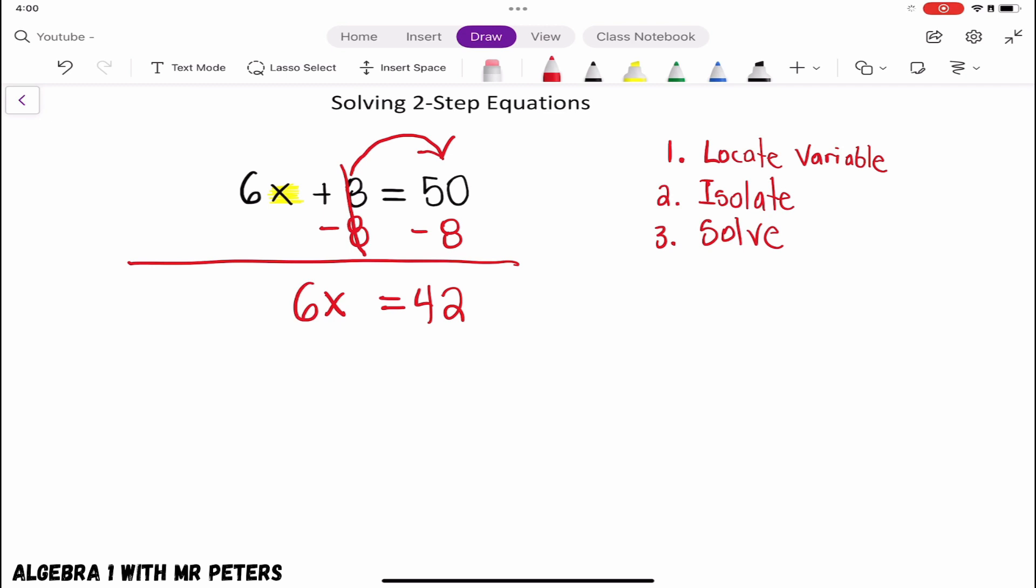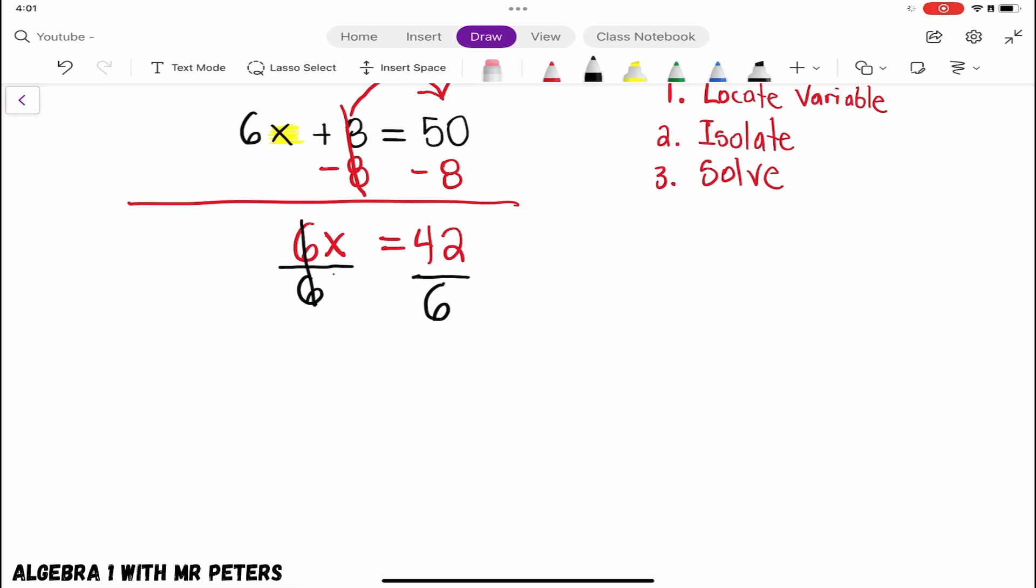So for us to get x absolutely by itself, we're now going to have to divide by 6. It's the opposite of multiplication, division. And then we'll go on the opposite side of the equal sign and we're going to do the same thing. And what I notice is x is now equal to 42 divided by 6. And we should know that our answer is just 7.